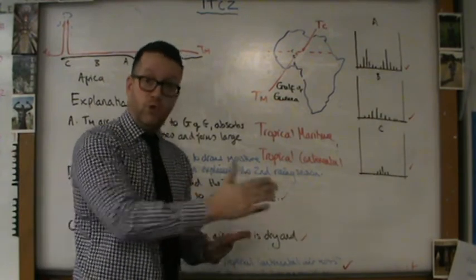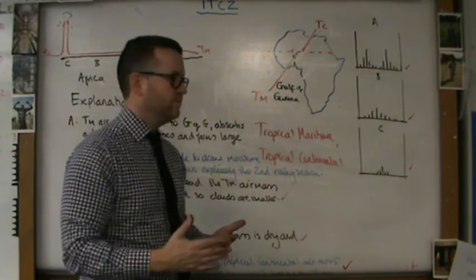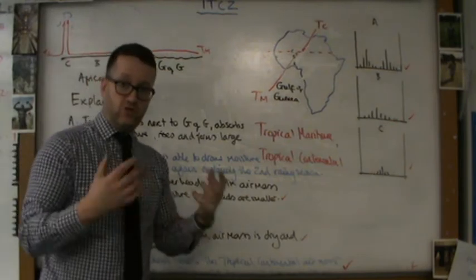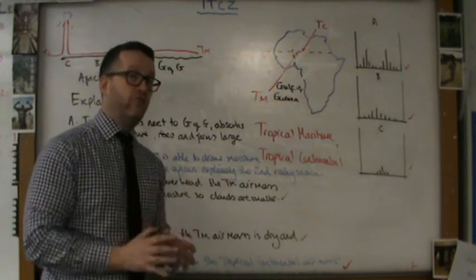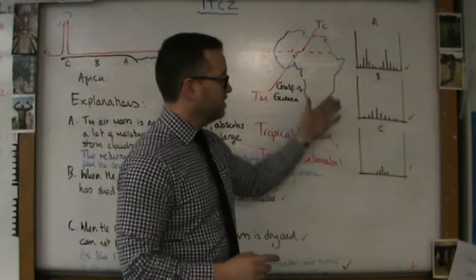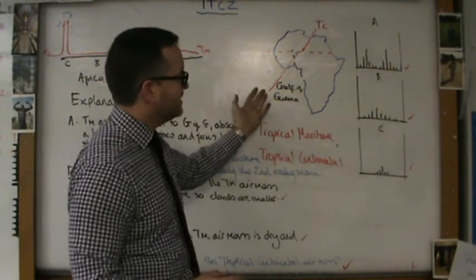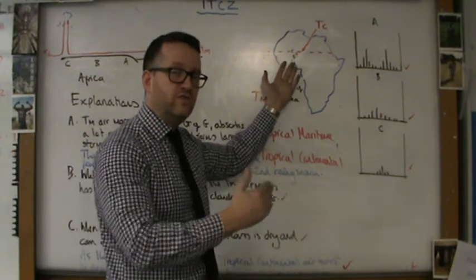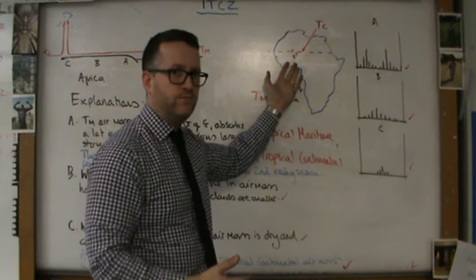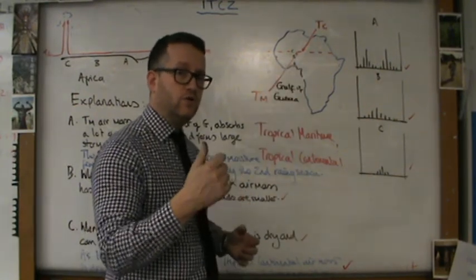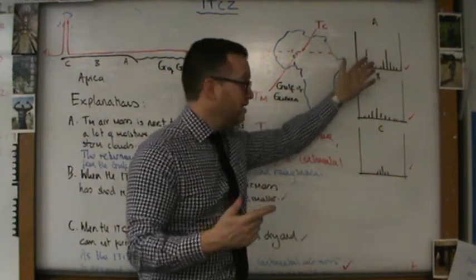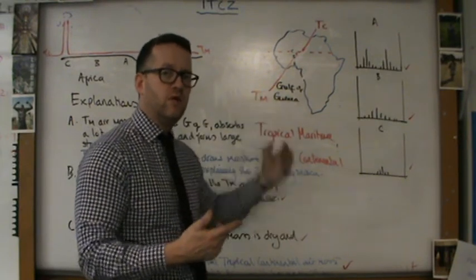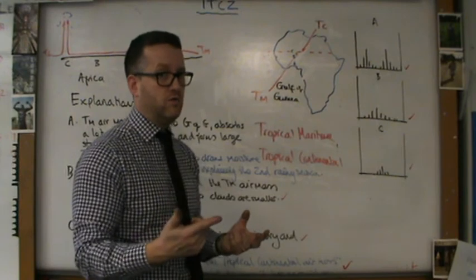And where they meet, there's a border, a boundary, and that's called the ITCZ. And at the ITCZ they are forced to rise up into the sky. Condensation takes place, clouds form, and rain falls. The reason there is the least rain here is because of the distance the tropical maritime air mass has to travel. It loses most of its moisture along that journey. That's the first mark winning point. Two, the reason there's loads of rain here is because the Gulf of Guinea is nearby and the tropical maritime air mass can draw lots of moisture into the system and create these huge storm clouds. Second mark winning point.